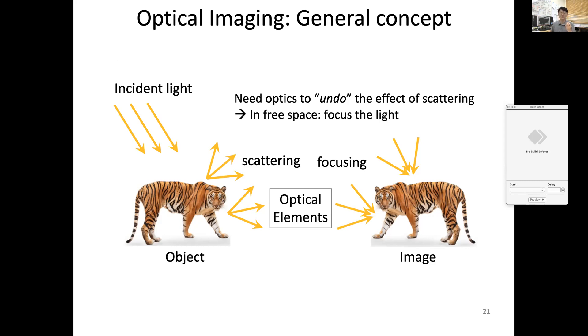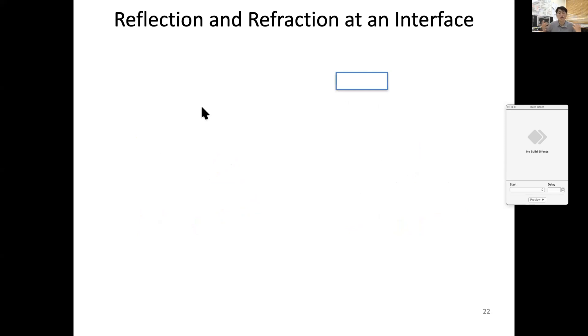In fact, imaging is where this scattering process has to somehow turn into a focusing process in a manner that you can have a spatial relationship. For this, in optical imaging cases, we do need some optics or optical elements to undo the effect of scattering and in free space focus the light.